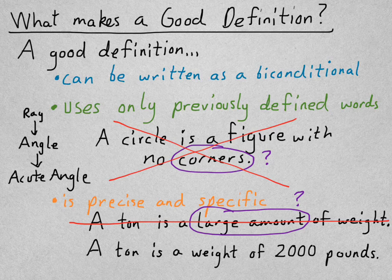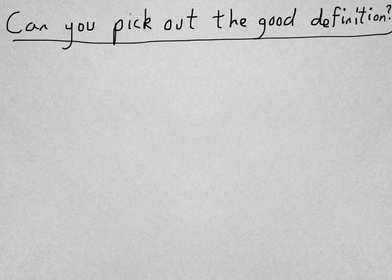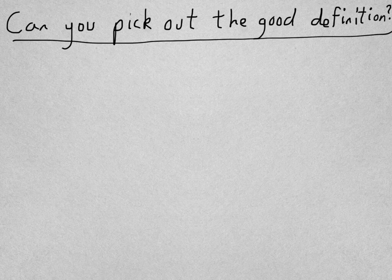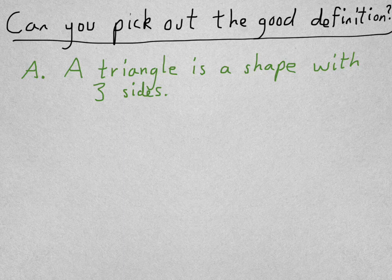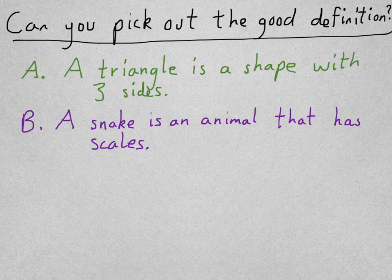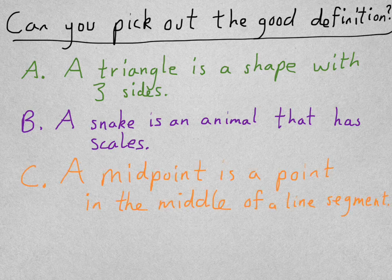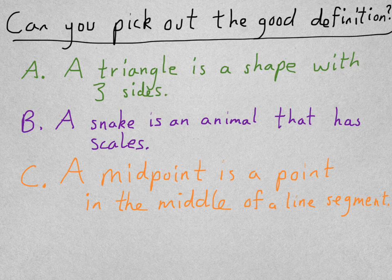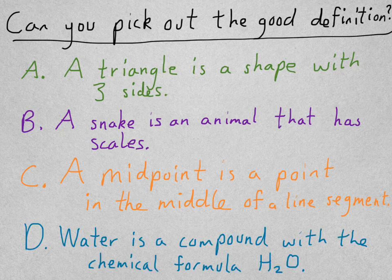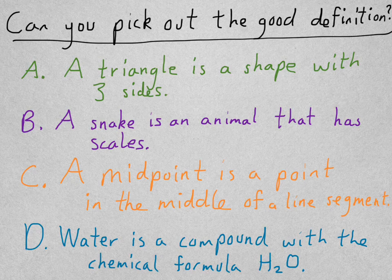So, let's look at one more set of examples. And, I want to see if you can pick out the good definition out of these. So, our first contestant on the Good Definition show is this one right here, who says that a triangle is a shape with three sides. Our second contestant, a snake is an animal that has scales. Our third contestant, a midpoint is a point in the middle of a line segment. And, our fourth contestant, water is a compound with the chemical formula H2O.